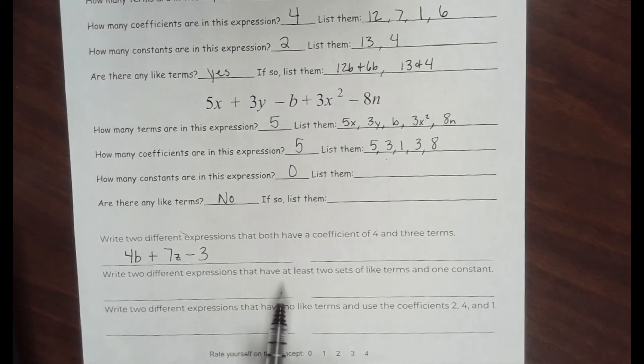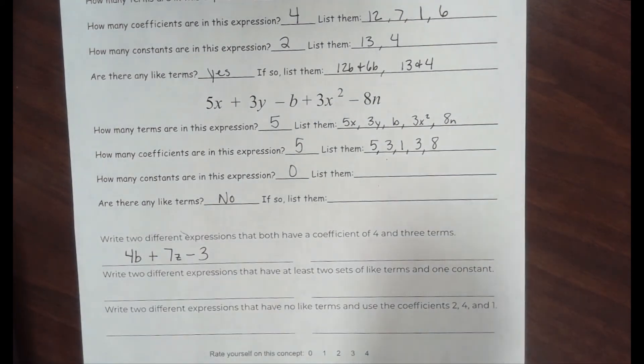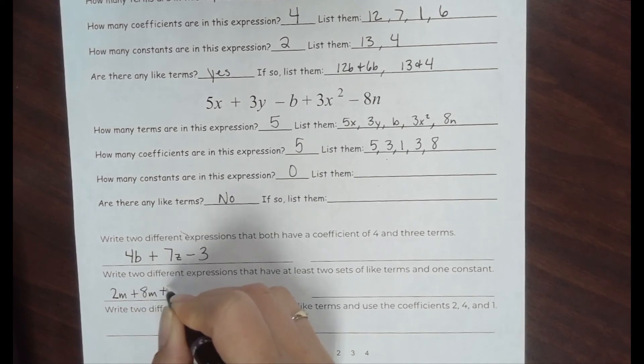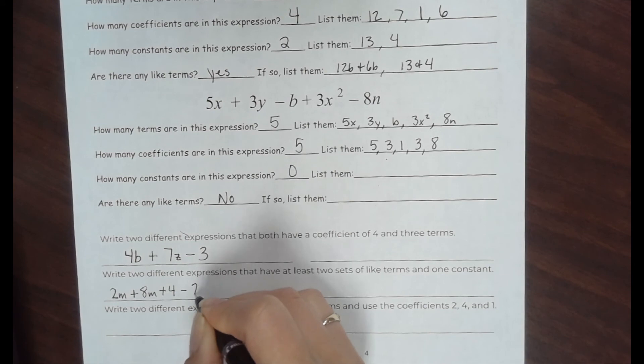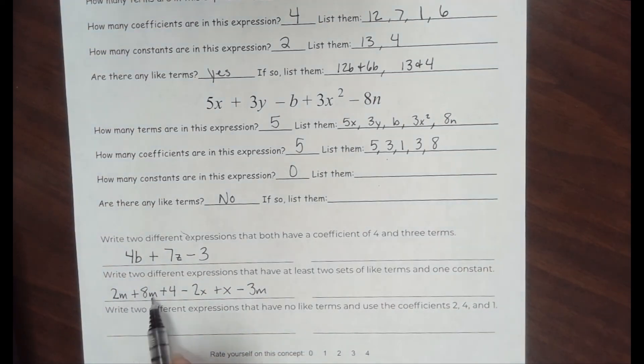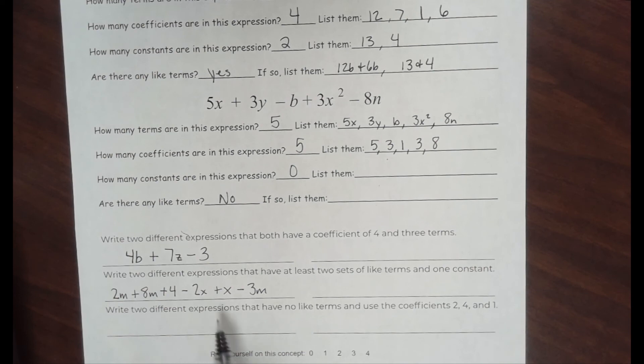Write two different expressions that have at least two sets of like terms and one constant. I need two sets of like terms, and I need one constant, meaning I need one thing without a variable. At least, so I can have more than that. If I want two sets of like terms, how about 2m plus 8m plus 4, there's a constant. 8m and 2m can be like terms. Or 8m minus 2x plus x minus 3m. Oh look, there's a set. I can have more than two that are like terms also. x's are like terms, all these m's are like terms. So there's two sets of like terms, and there's one constant in there. Make up your own over here.